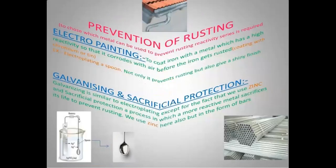Prevention of rusting: to choose which metal can be used to prevent rusting, the reactivity series is helpful. Two common processes can prevent rusting of iron. The first is electroplating — coating iron with a metal of high reactivity so that it corrodes with air before the iron gets rusted. Coating with chromium or tin is therefore used. Electroplating of a spoon is a common example that not only prevents rusting but also gives a shiny finish.